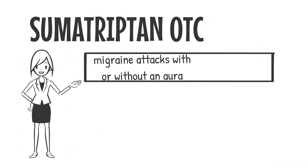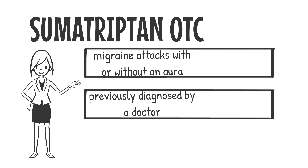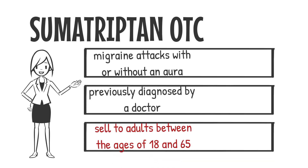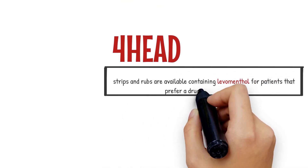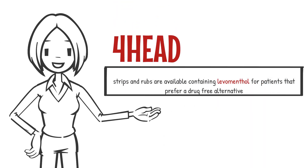Sumatriptan 50mg is available over the counter for migraine attacks with or without an aura, previously diagnosed by a doctor, and is suitable to sell to adults between the ages of 18 and 65. Forehead strips and rubs are also available, containing levomenthol, for patients that prefer a drug-free alternative.